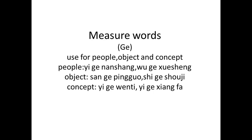For any object that does not already have its own measure word, we can use 个 (gè). For example: three apples — 三个苹果 (sān gè píngguǒ). Ten cell phones — 十个手机 (shí gè shǒujī). These are examples of using 个 (gè) as the general measure word for objects.